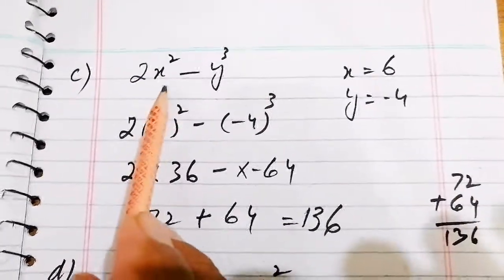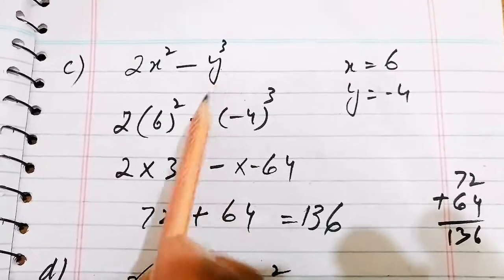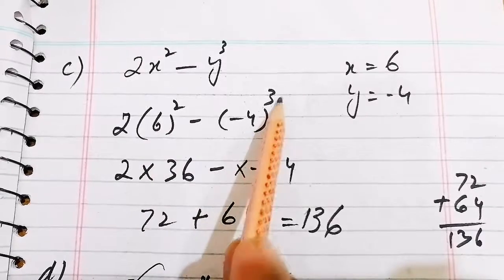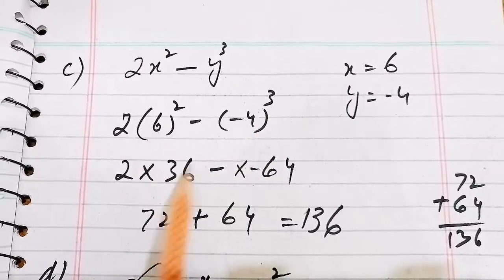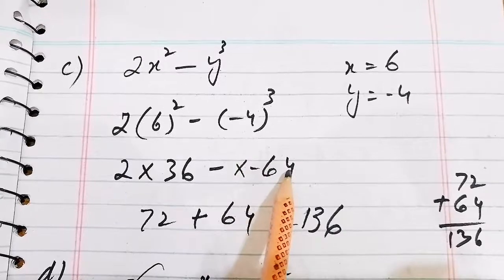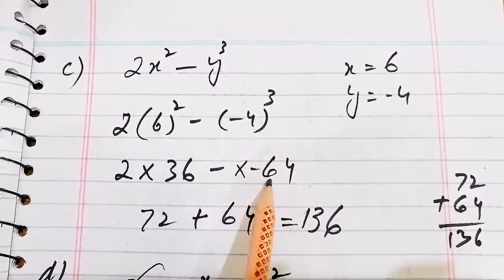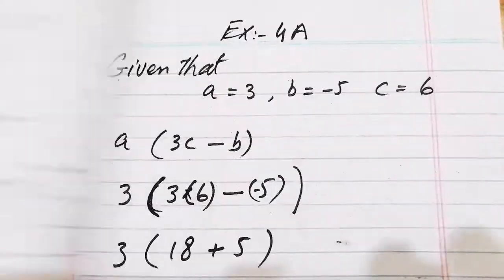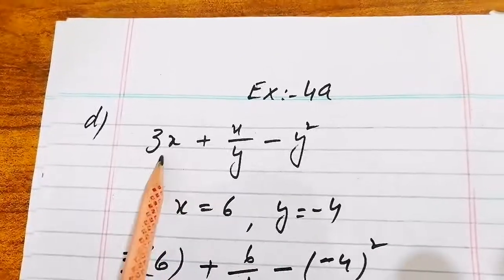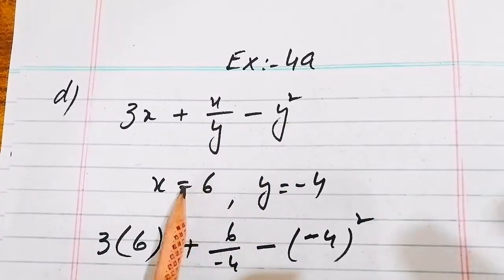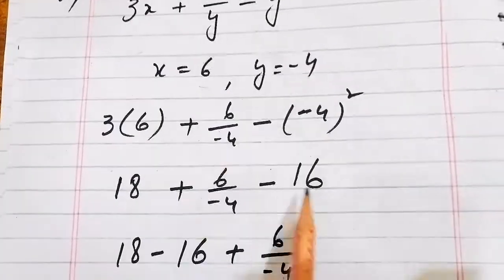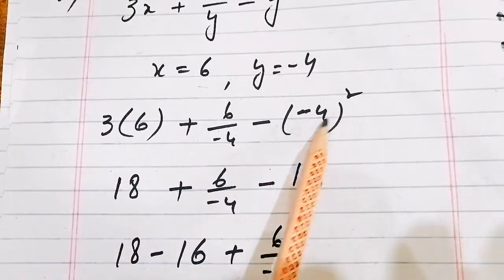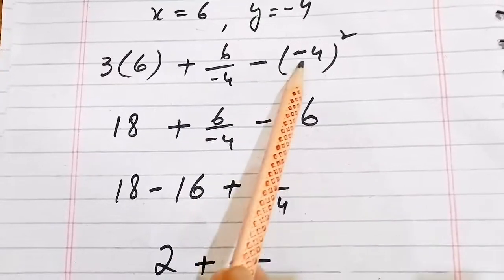For part (c), 2x squared minus 3y cubed: substituting values, we get 2 times 6 squared minus 3 times minus 4 cubed. That is 2 times 36 minus 3 times minus 64, giving 72 plus 192 equals 264. For part (d), 3x plus x over minus y squared: substituting, we get 18 plus 6 over minus 16.